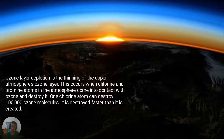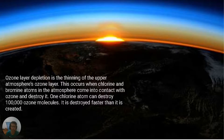Ozone layer depletion is the thinning of the upper stratosphere's ozone layer. This occurs when chlorine and bromine atoms in the atmosphere come into contact with ozone and destroy it. One chlorine atom can destroy 100,000 ozone molecules, and it is destroyed faster than it is created.